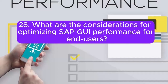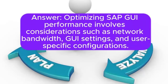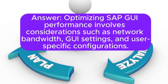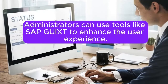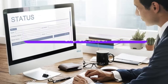28. What are the considerations for optimizing SAP GUI performance for end users? Answer: Optimizing SAP GUI performance involves considerations such as network bandwidth, GUI settings, and user-specific configurations. Administrators can use tools like SAP GICST to enhance the user experience.